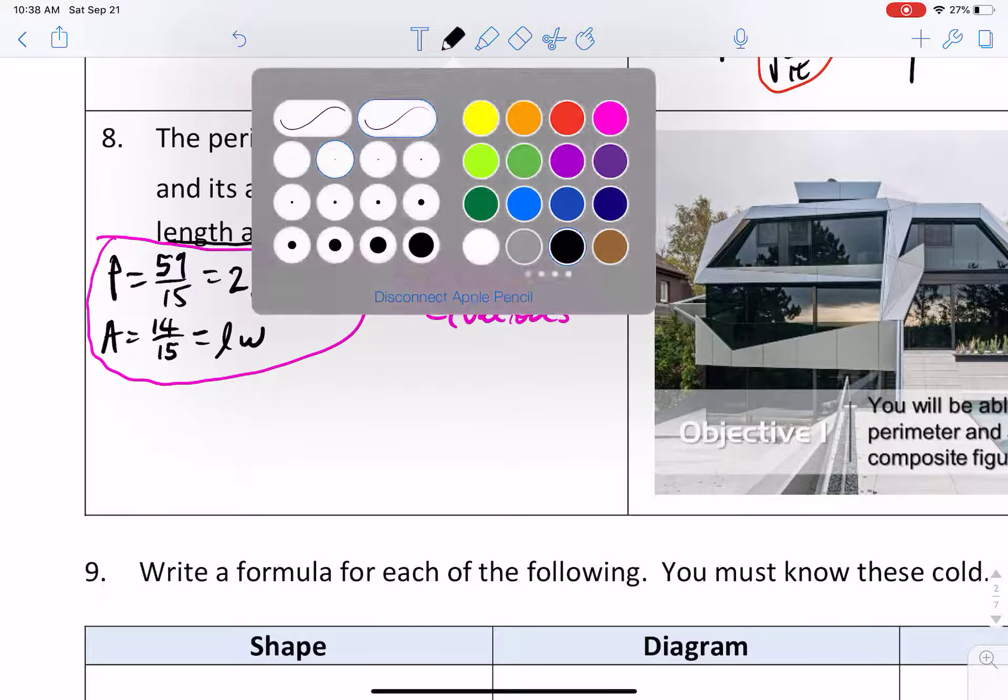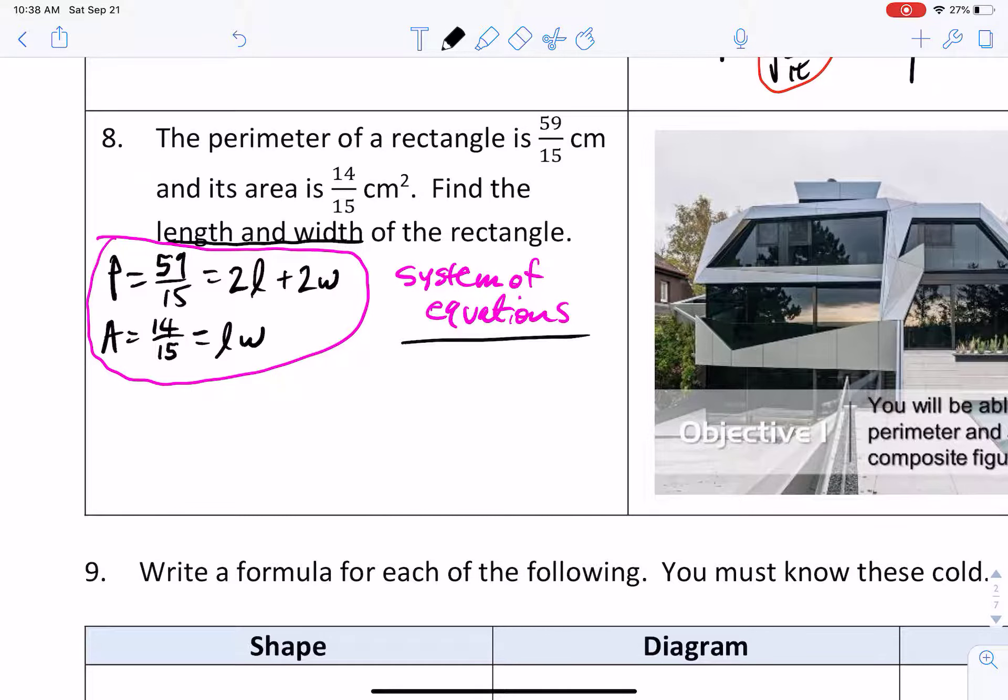And how do you solve a system of equations? At this level, we've got three options. We've got graphing, we've got substitution, and we've got elimination.